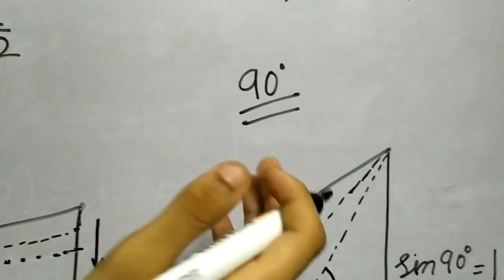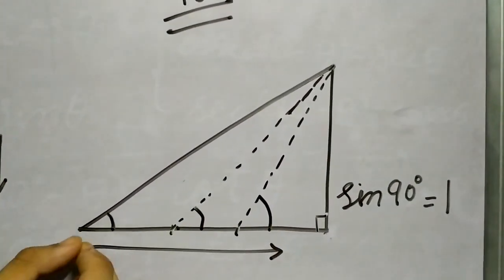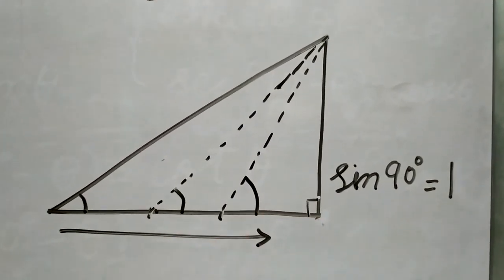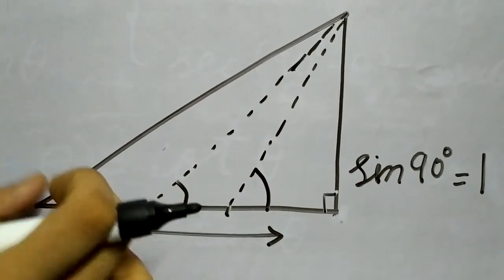And then we moved on to 90 degree, 90 degree triangle. And what did we solve? That if I move this line towards 90 degree, this angle increases. So clearly this angle is bigger than this one, which itself is bigger than this one.